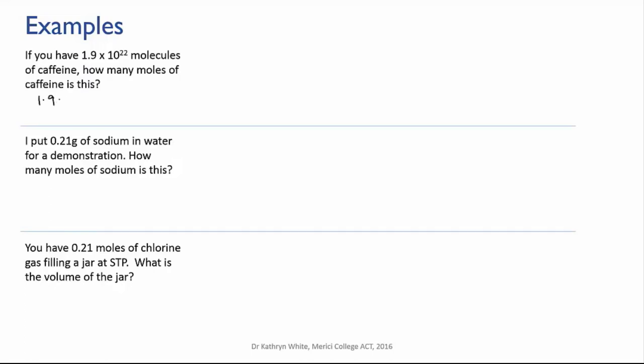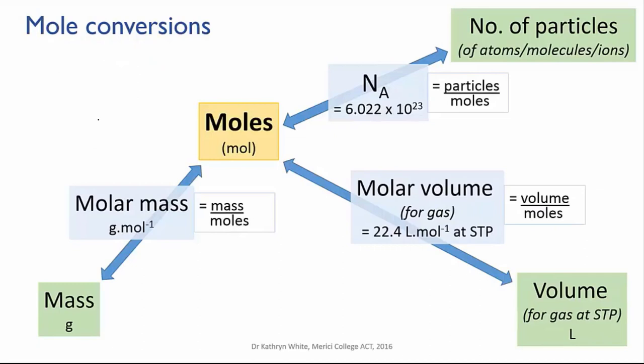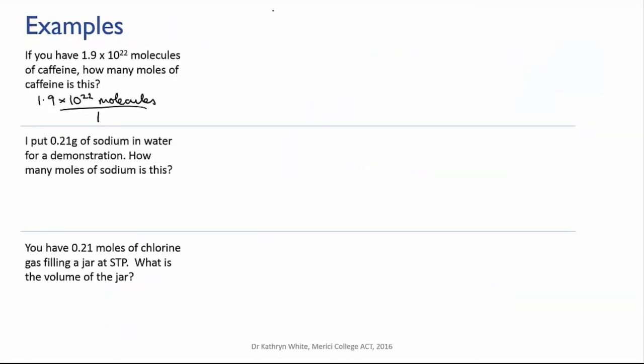So we write down what we know as a fraction and then we think about what conversion factor we need. Well, if we go back to our mole map, the conversion factor between number of particles and moles is Avogadro's number. So we know that 6.022 times 10 to the 23 particles, in this case our particles are molecules, so I'm going to write molecules, is equivalent to 1 mole.